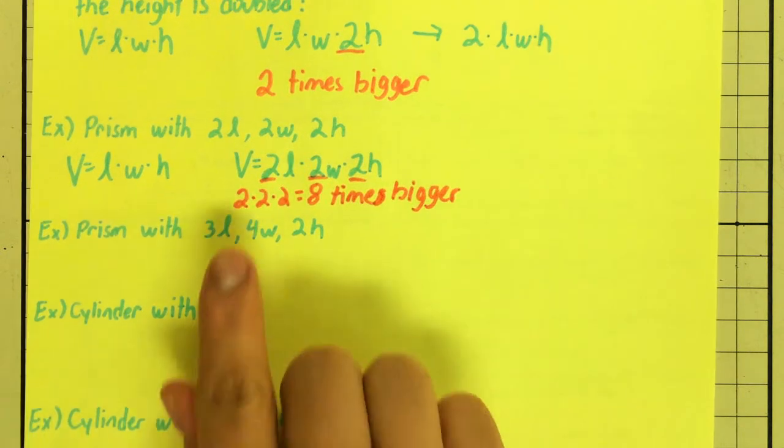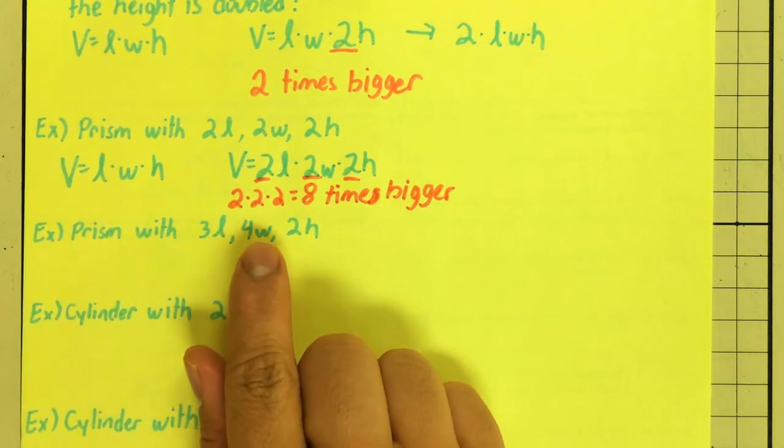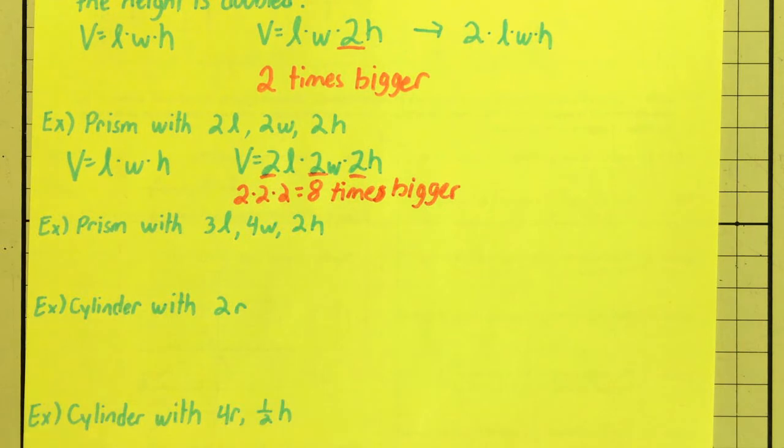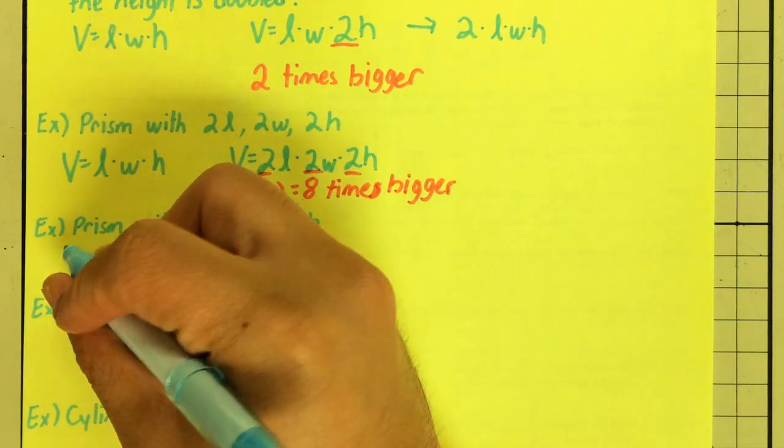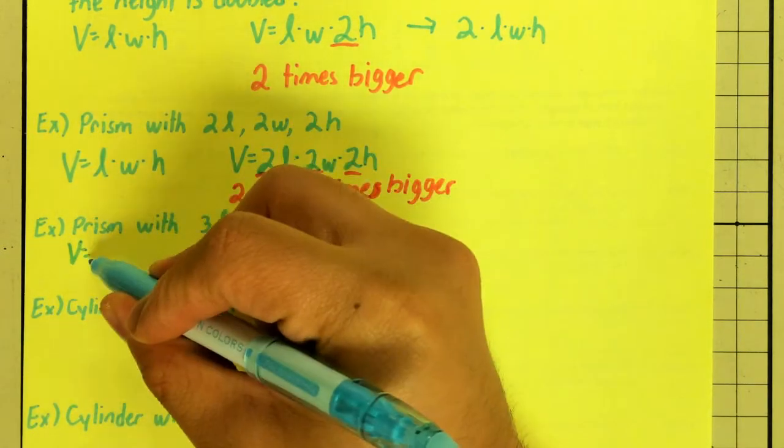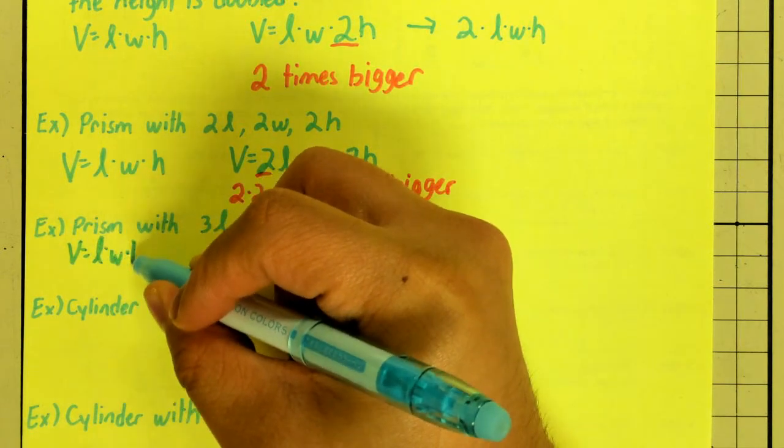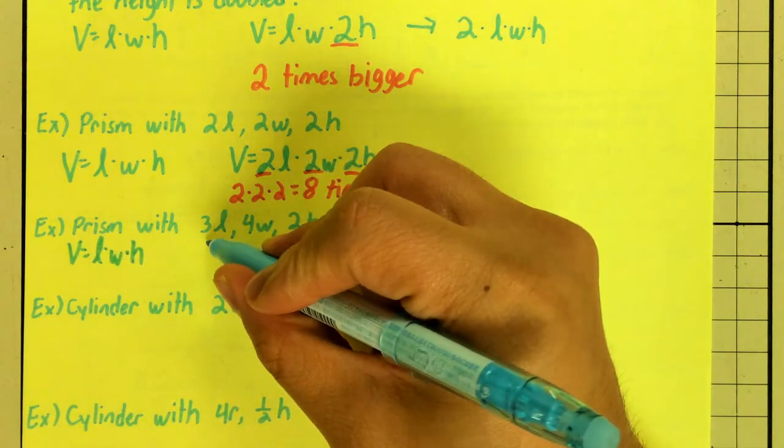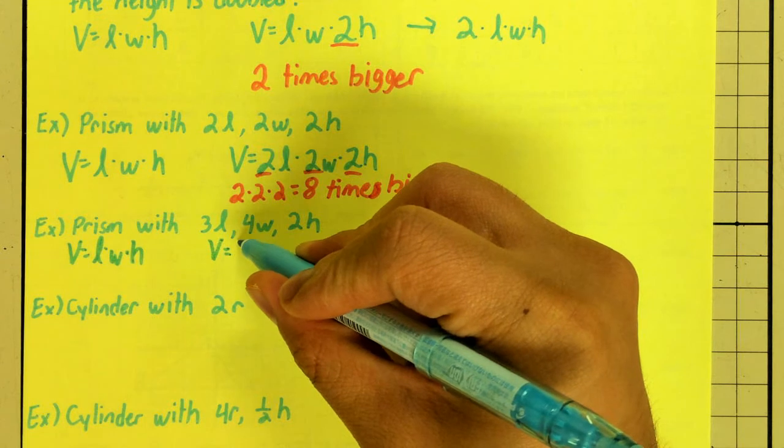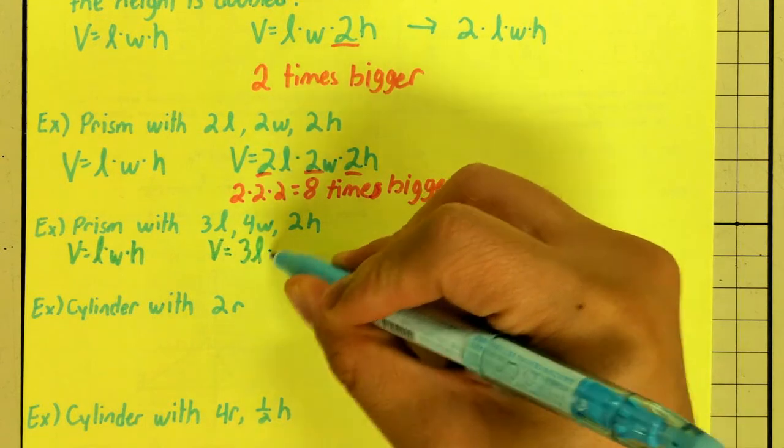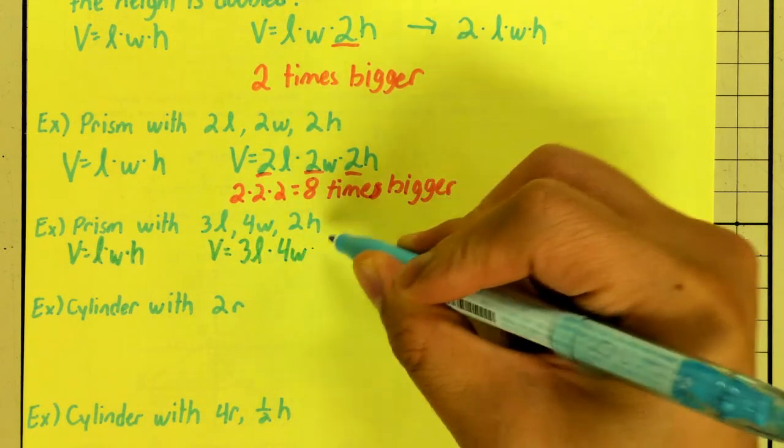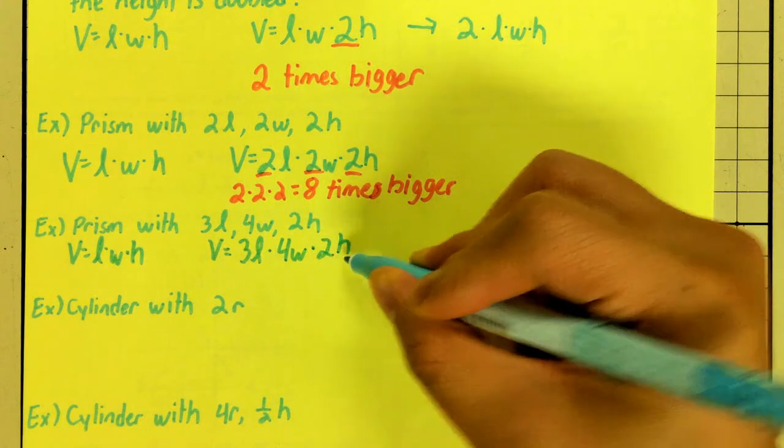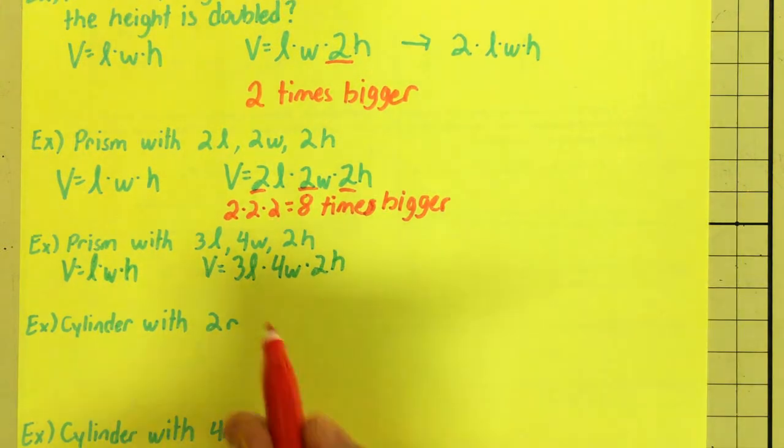Next example, this time I have tripled the length, quadrupled the width, doubled the height. I have different numbers for them. Volume formula, still length times width times height for a prism. My new volume, I have tripled my length times 4 times the width and 2 height.